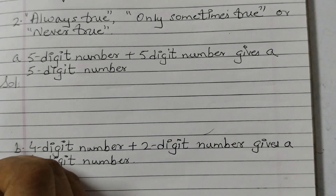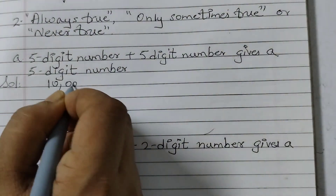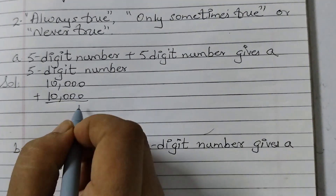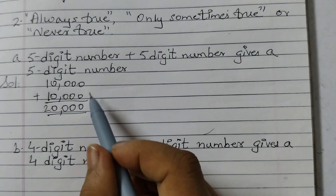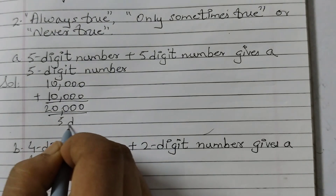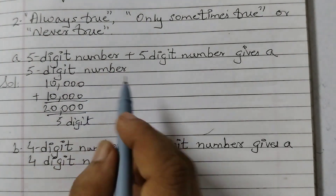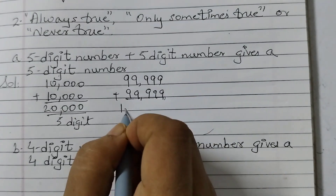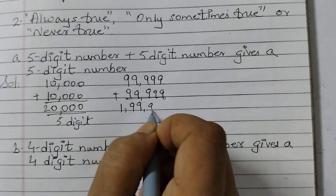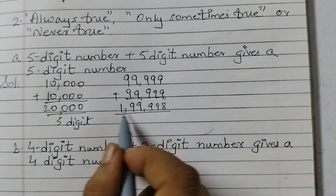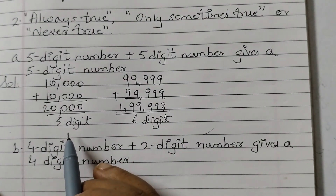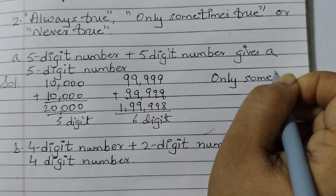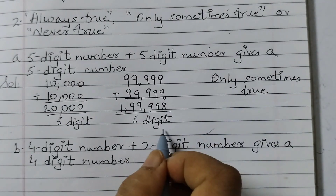Let's find out using examples. Take the smallest 5-digit number: 10,000 plus 10,000. We get 20,000 — a 5-digit number. Now take the largest: 99,999 plus 99,999. We get 199,998 — a 6-digit number. So we are getting a 5-digit result sometimes and a 6-digit result other times. That means this statement is only sometimes true, because we can also get a 6-digit number.